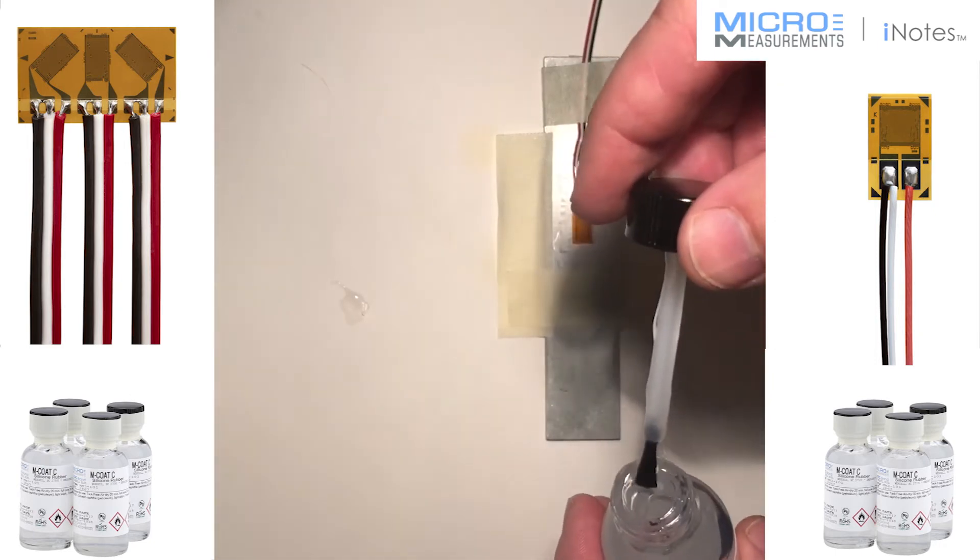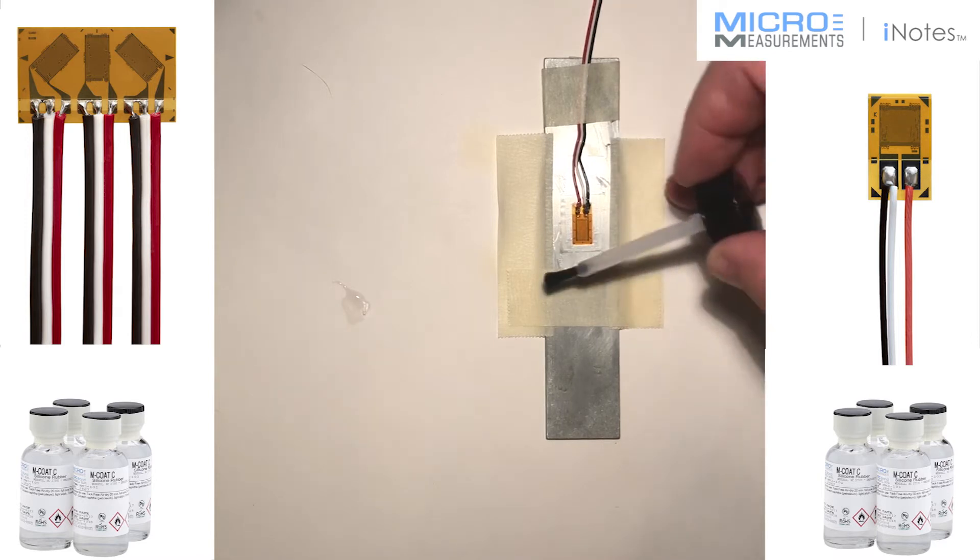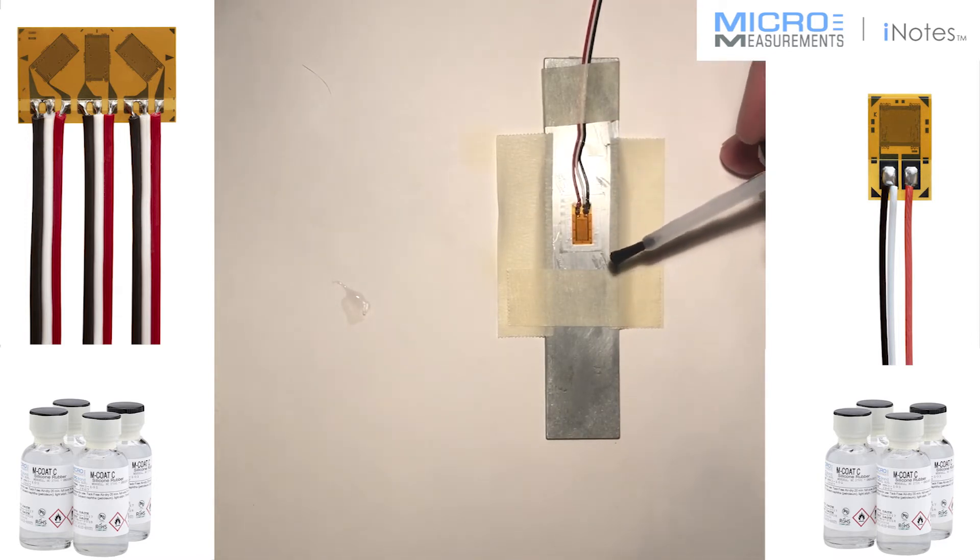When you apply it, you paint it on, and before I do that, I wanted to show you, I masked off the AE10 adhesive that I used to bond this gauge, and then I masked off with tape outside that, so I've got about an eighth of an inch outside that area.